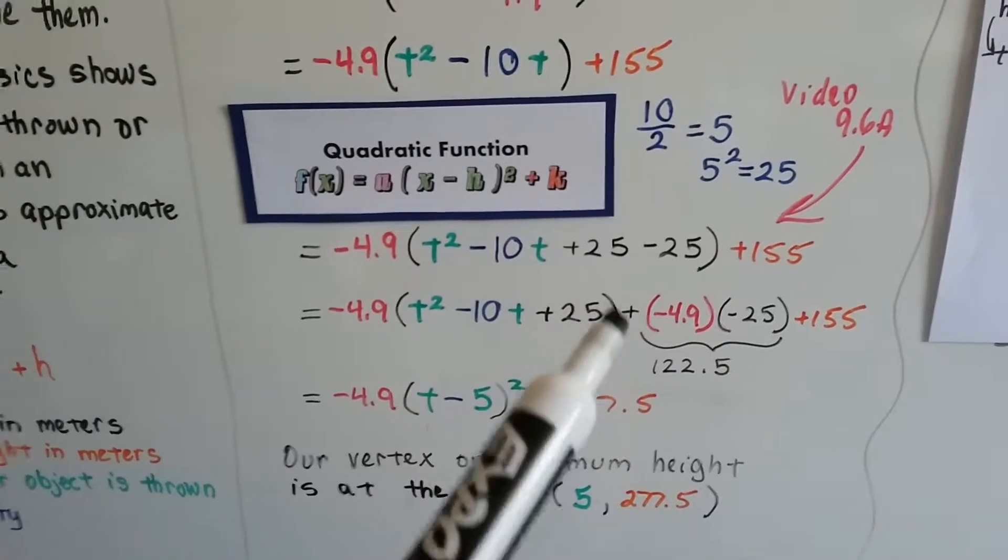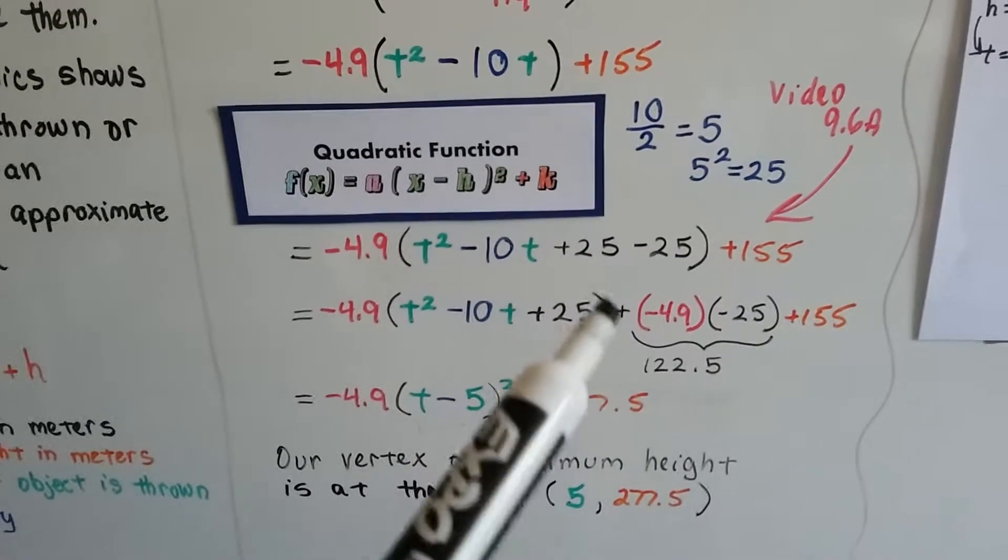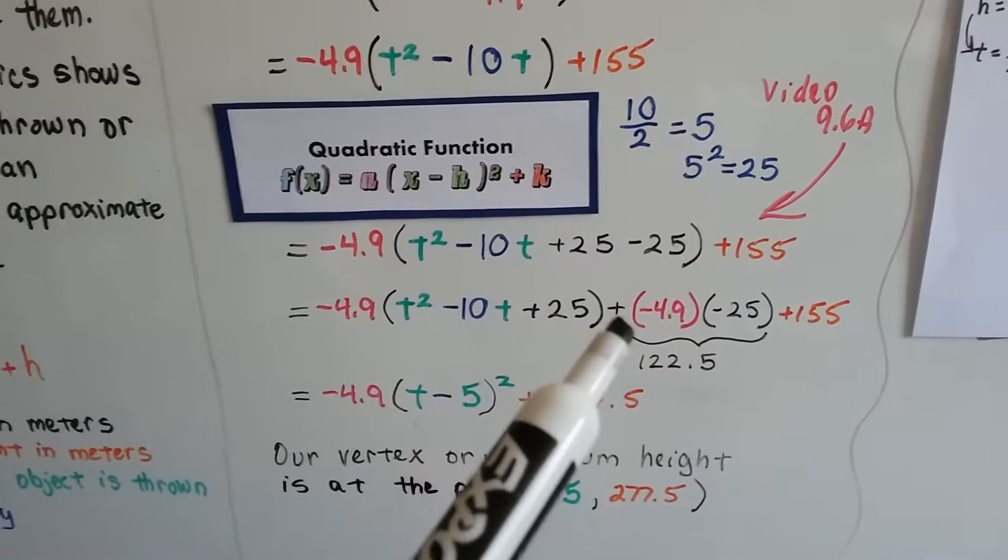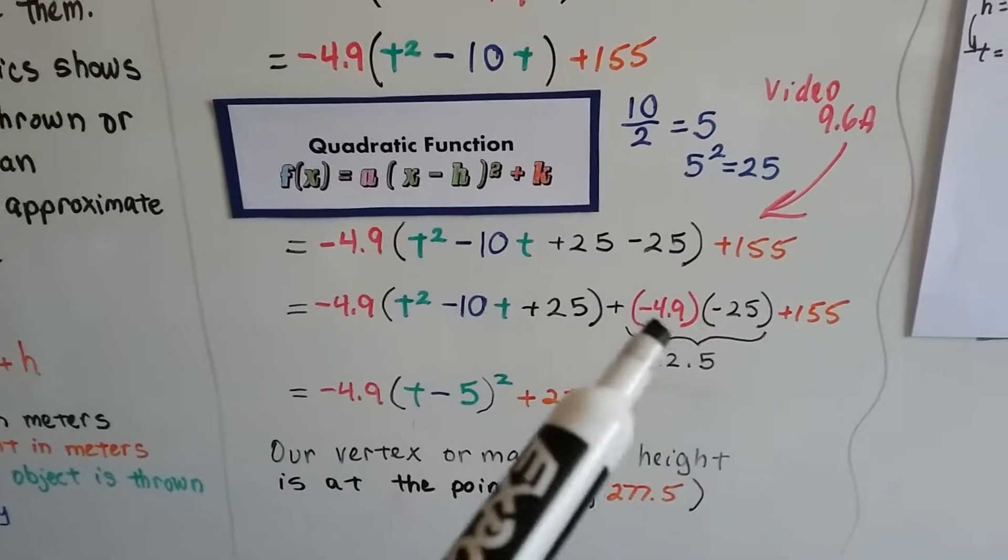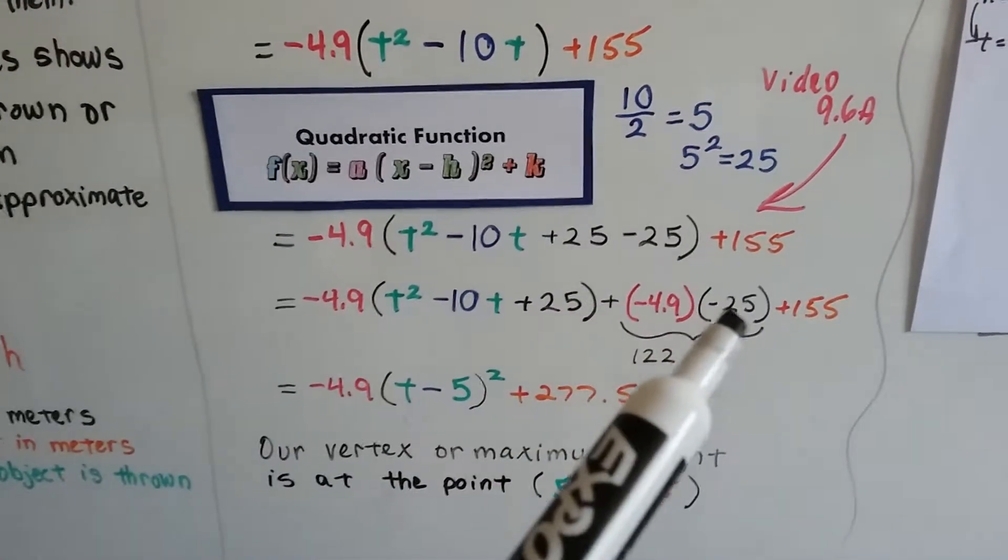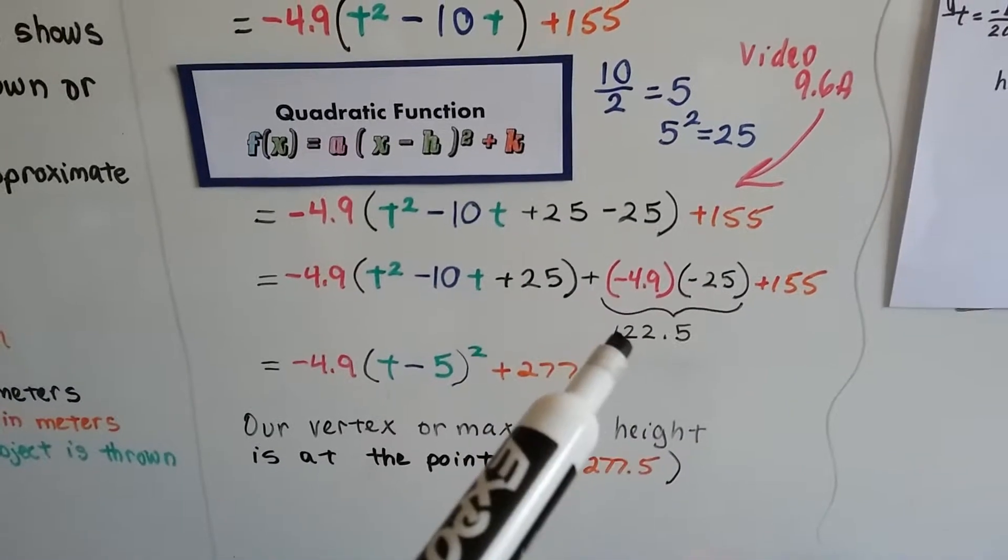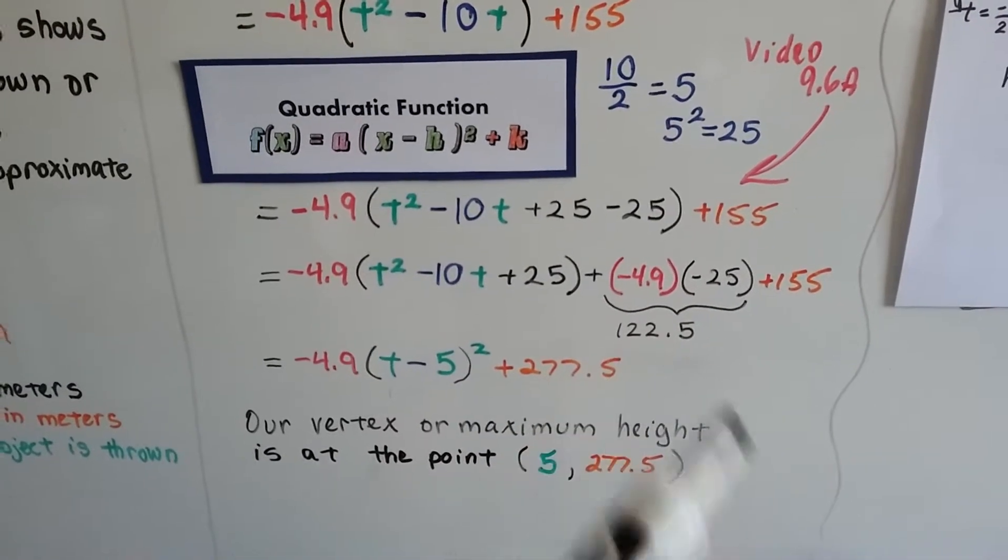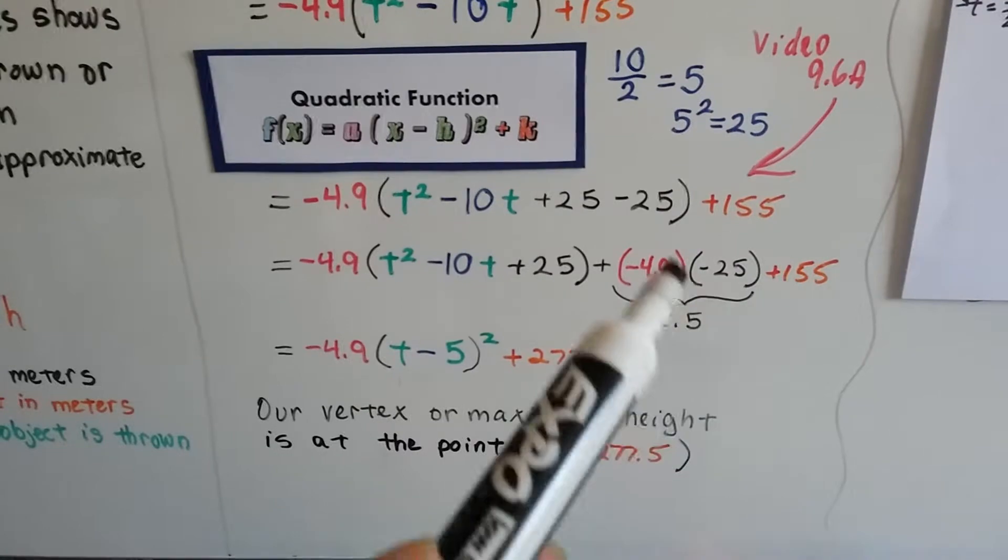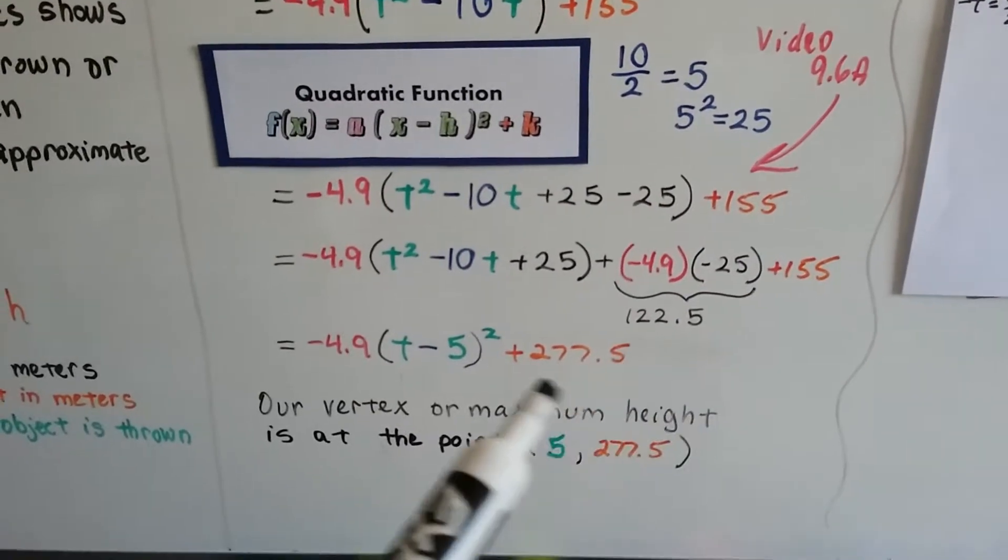We can regroup this by putting the parentheses after this plus 25 and then adding a negative 4.9 times this last negative 25. We multiply these two together and we get 122.5.